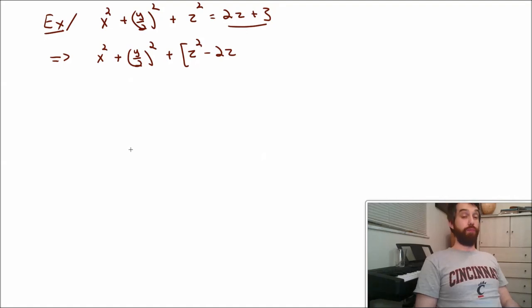Something like z, oh there's my Canadian sneaking in, my z minus 1 squared. So I want to put a plus 1 here. And if I add a 1, but I don't want to violate things, I need to subtract 1 as well. And I can say all of this is equal to 3.